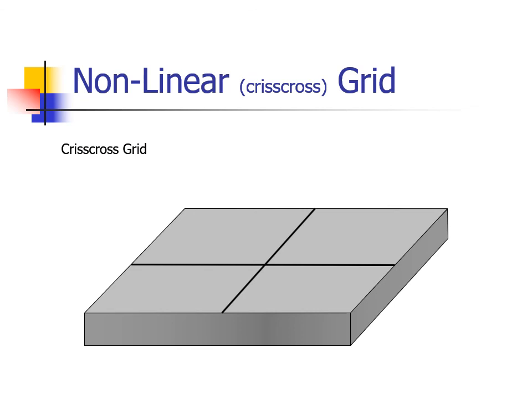Criss-cross grids have the advantage of superior ability to remove scatter when compared to their linear counterparts. A disadvantage is that you can't do any views that require a tube angle because you'll always be angling across one of the two grids.